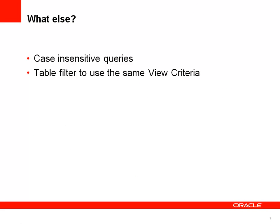In the demo I already showed how to build case-insensitive queries, which was the second problem statement. Now let's look at the third problem: how to customize the table filter so that when you configure a table to be filterable, it uses your custom view criteria, allowing you to influence or modify the way the filter searches.